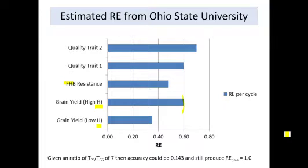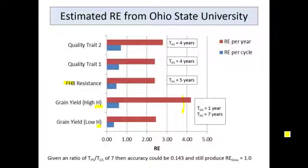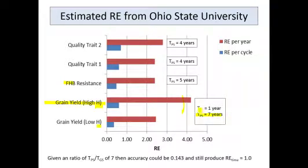Now let's look at relative efficiency per year. Showing the relative efficiency per year in the red bars — for grain yield under high heritability, a cycle of phenotypic selection for grain yield takes me seven years. I work with winter wheat; it's a slow process. But I can go through a cycle of genomic selection in one year. Plug those values into those equations, and now my relative efficiency of genomic selection per season for grain yield is now greater than four. So again, the advantage of genomic selection is your gain per season, not so much your gain per cycle.